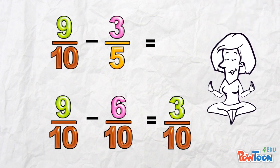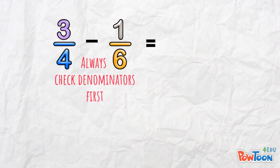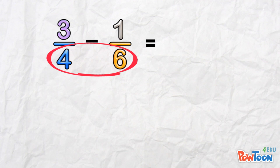One last example, then it's over to you. 3 quarters minus 1 sixth. Remember, always check your denominators first. When they're different, we have to make a common denominator.